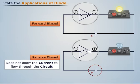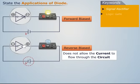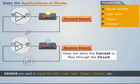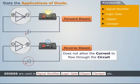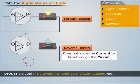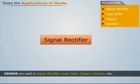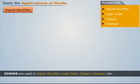Diodes are used in signal rectifier, logic gate, clipper, clamper, etc. Now let's discuss these applications in brief. Let's start with signal rectifier. Most of the electricity generated is alternating in nature, and most electronic gadgets require DC supply for operation, so AC supply should be converted to DC supply.